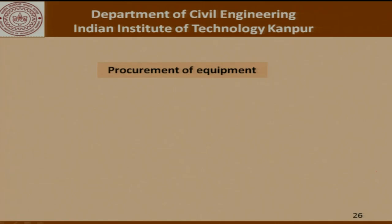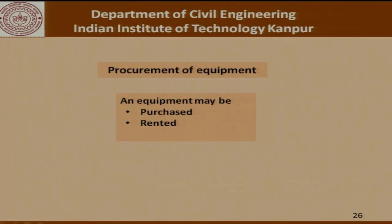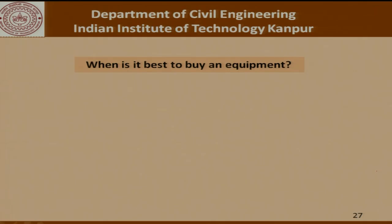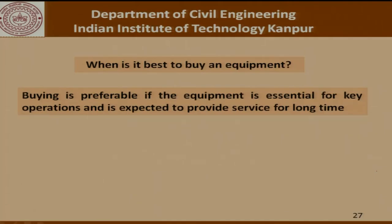Now let us talk about procurement of equipment. Basically, we need to use a certain equipment at a certain site — what are our options? The equipment can be purchased, rented, or leased. Buying is preferred if the equipment is essential for key operations and is expected to provide service for a long time. The contractor makes a decision that this crane or excavator is going to be used in this project and will also be useful to the company in the long run in other projects. Owning equipment can also provide long-term tax benefits.